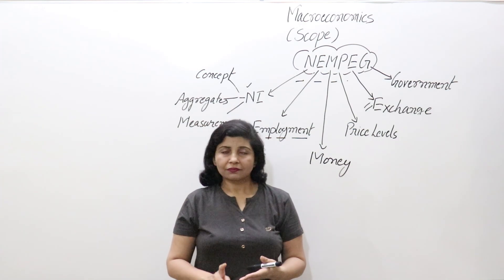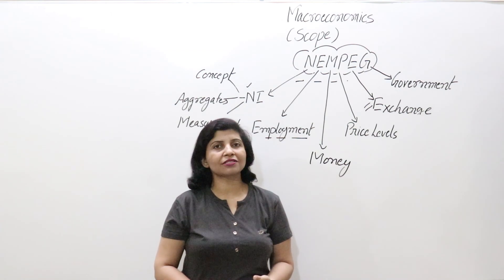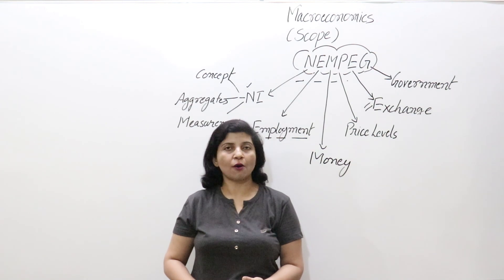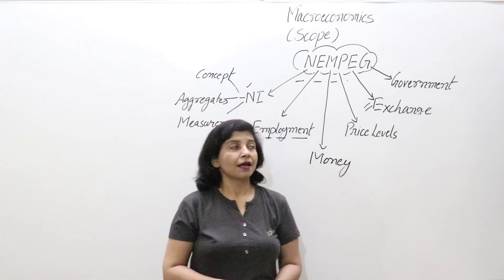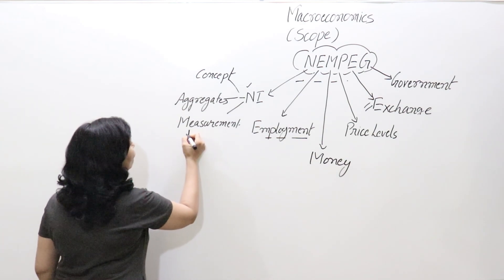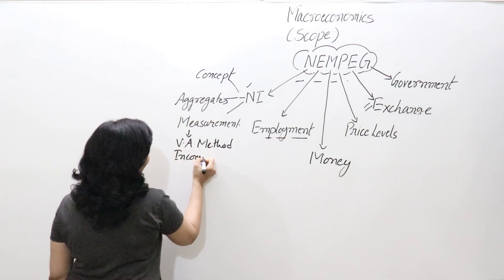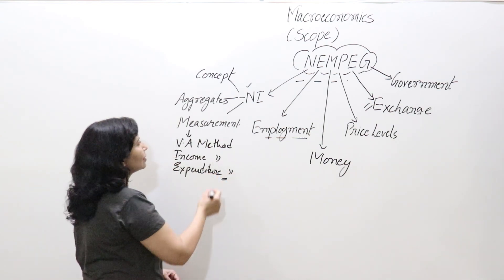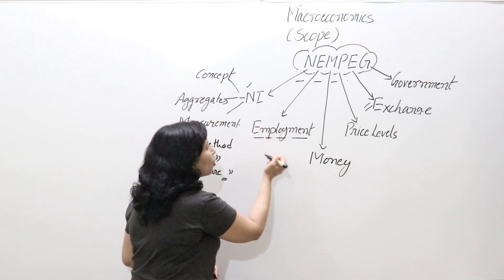We will also study aggregates related to national income — GDP (Gross Domestic Product), GNP (Gross National Product), NDP (Net Domestic Product), NNP (Net National Product), and net factor income from abroad. We will also discuss national income at factor cost and at market prices, as well as measurement techniques: the value-added method, income method, and expenditure method.